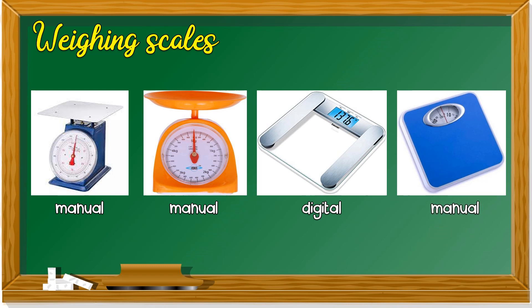How do you differentiate manual and digital weighing scales? For manual, the weighing scale has the needle. Whereas for digital, it shows numbers. So manual has needles, but digital has digital numbers.